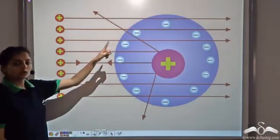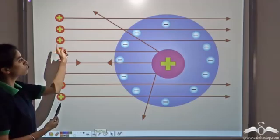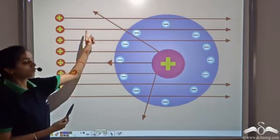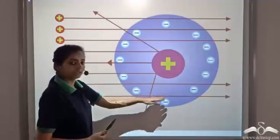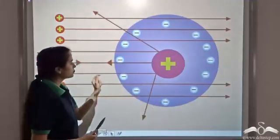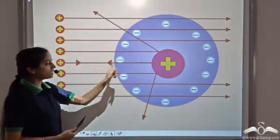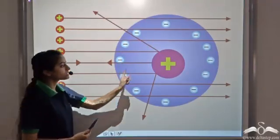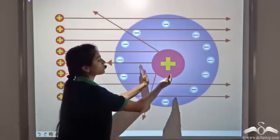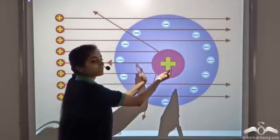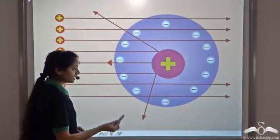This is how he proposed the structure of the atom. Since most of the alpha particles went straight through, most of the space in an atom is empty. Some particles were deflected and very few bounced back, meaning the entire mass of the atom is concentrated in the centre of the atom, which he called the nucleus.